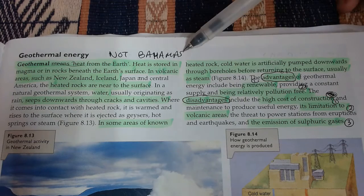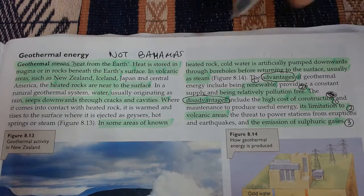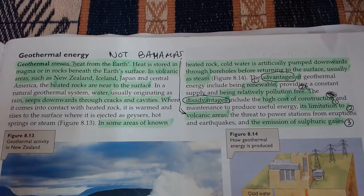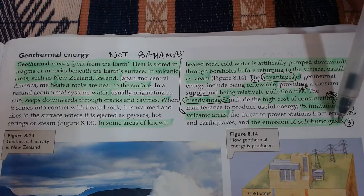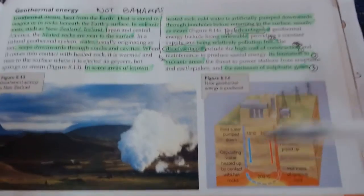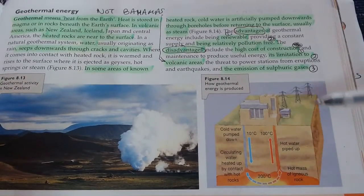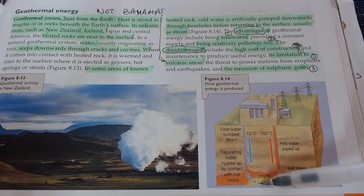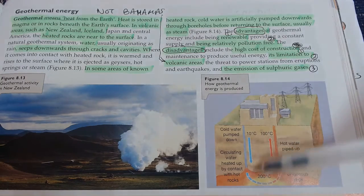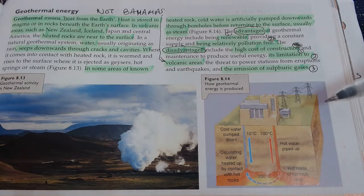For the Bahamas, this isn't an option because we are not a volcanic area. One additional problem is that geothermal energy does produce sulfuric gases, which can be poisonous. The diagram shows the process: magma is shallow, the crust is thin, cold water is pumped down, heated into steam or hot water, then pumped back up to generate energy.